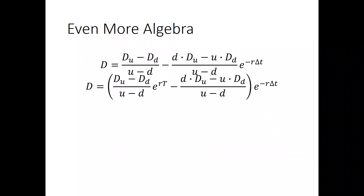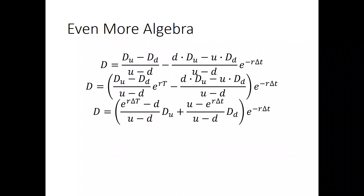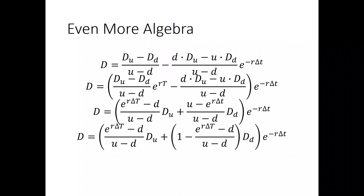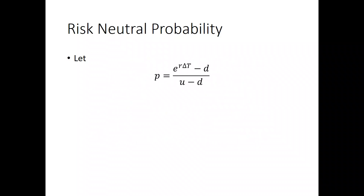We can see that the first term, d sub u minus d sub d over u minus d, did not have an e to the minus r delta t, so we now have e to the r delta t there. Then we recognize that u minus e to the r delta t over u minus d is the same as 1 minus e to the r delta t minus d over u minus d. And now we can see that fraction — e to the r delta t minus d over u minus d — showing up in both places. We're going to call that our risk-neutral probability.